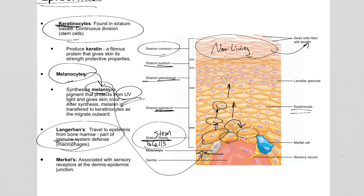Langerhans cells are effectively the immune cells of the epidermis. They act like macrophages — scanning for infection and looking for any bacteria or viruses that may have gotten through the upper layer of the epidermis. Merkel cells are sensory receptors — touch receptors that detect fine touch and connect to sensory neurons, just another subcategory of sensory receptor in the skin.